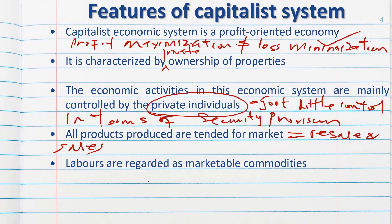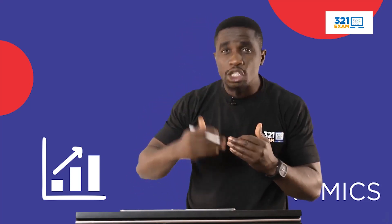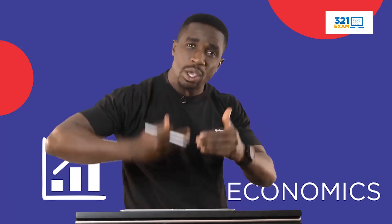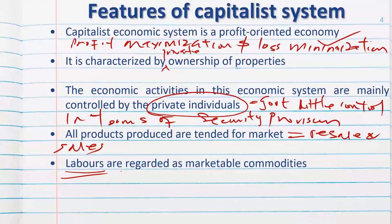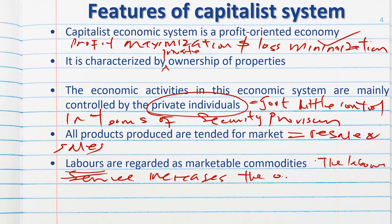Laborers are regarded as marketable commodities because it is labor that is used for production. Every producer tends towards having enough laborers for production — the higher the labor you have, the higher your output level, and the lower the labor, the lower the output. Labor services can be bought to increase output.